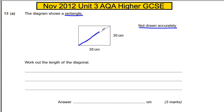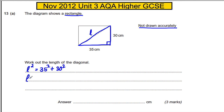So we're trying to work out this length here, and you should be able to see — these are always the same sort of thing — we could use a right-angled triangle. So this length, which I'll call L. Pythagoras says that the hypotenuse squared is the square of the other two sides added together, so the length squared must be 35 squared plus 30 squared, which would be 2125.